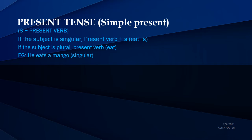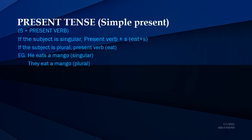For example: 'He eats a mango' — he is a singular subject so we add 's' to the verb. The next example is 'They eat a mango' — here 'they' is a plural subject, so we don't use 's' along with the verb.